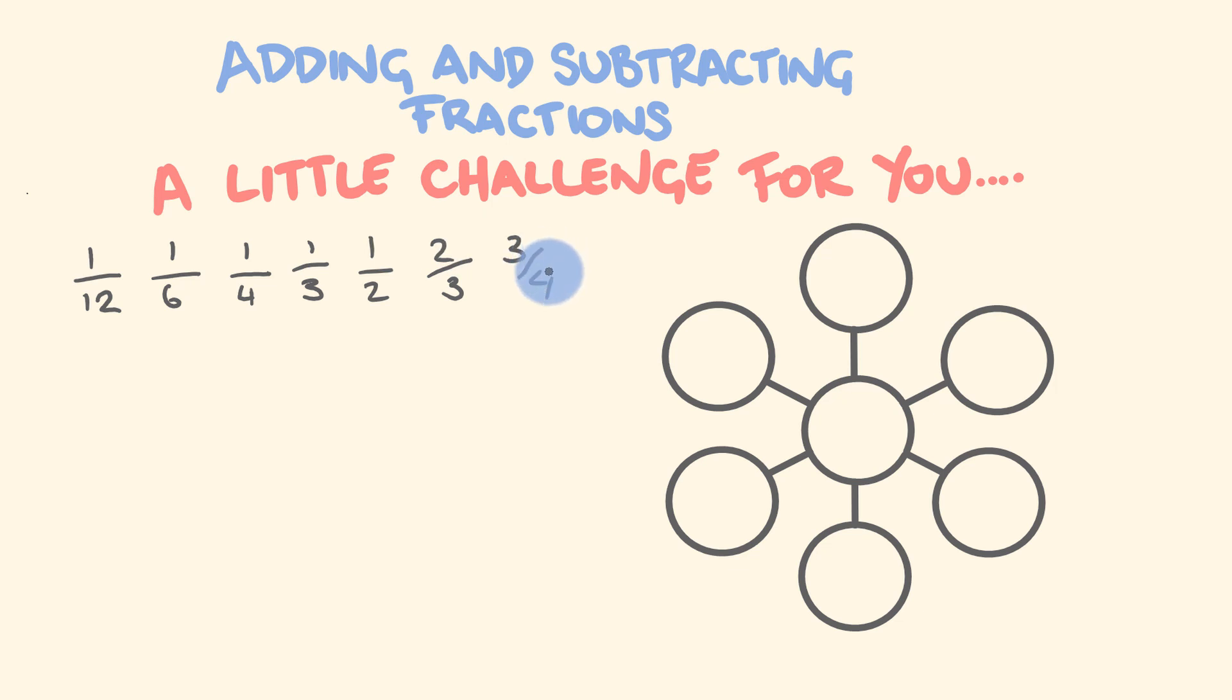Now, this is your challenge here: you have to arrange these fractions in these circles here. We have seven circles, seven fractions. You have to arrange the fractions in the circles so that the sum of each row is the same. So this row adds up to the same as this row adds up to the same as this row.